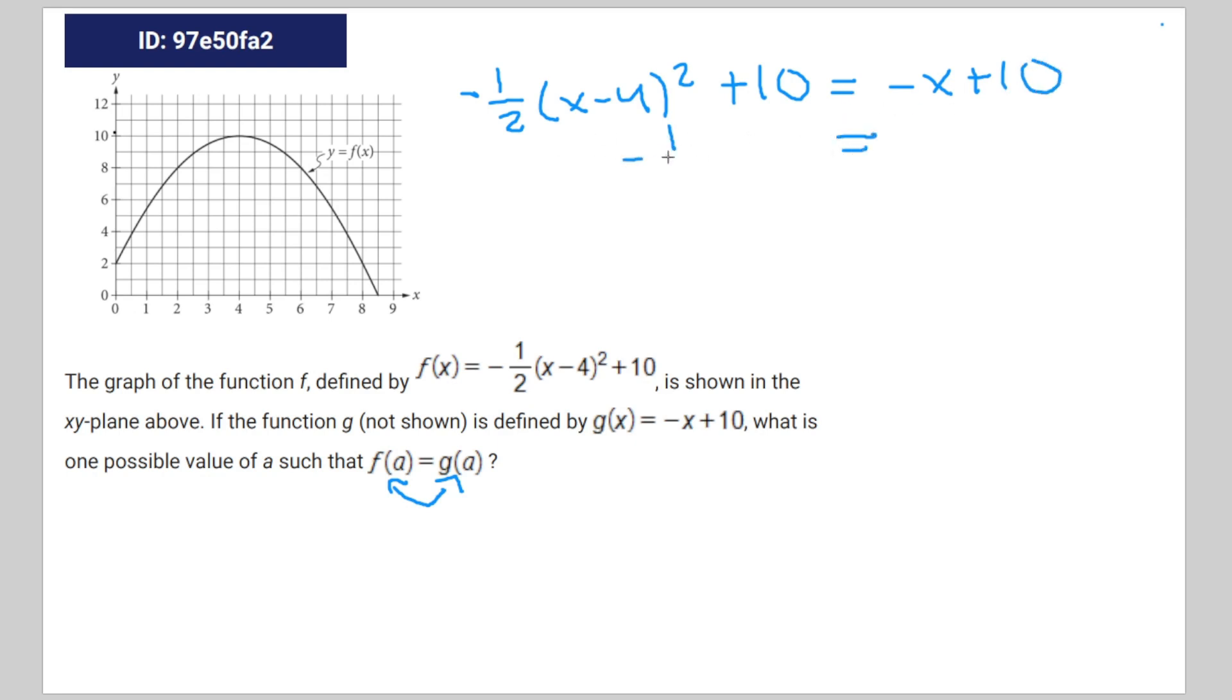Subtract 10 from both sides, you get -1/2(x - 4)^2 = -x.